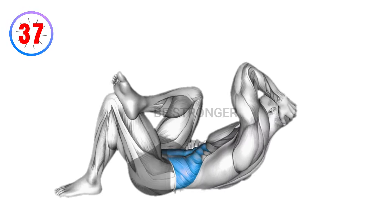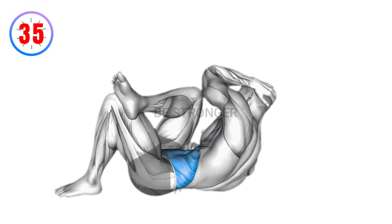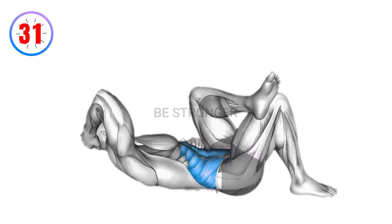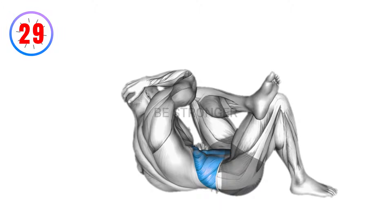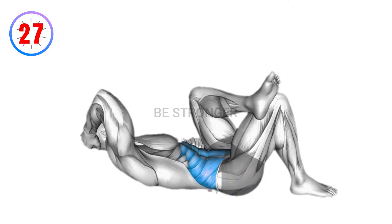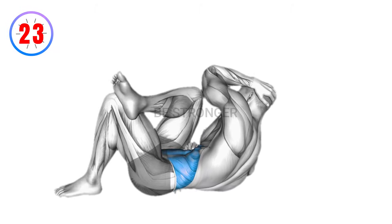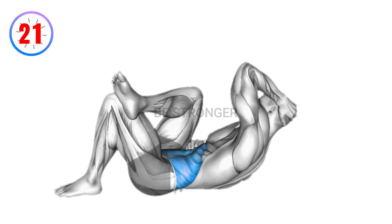Return to the starting position and repeat on the other side. This exercise not only targets the lower abdominal region but also works the oblique muscles, providing a comprehensive workout for a stiffer lower belly. Consistent daily practice enhances muscle tone and overall core strength.